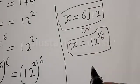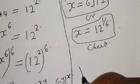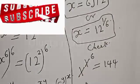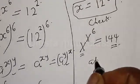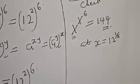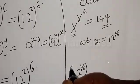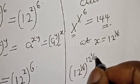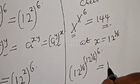Now let's check to confirm if our answer is right. We have the given equation s raised to power s raised to power 6 is equal to 144. The left hand side must equal the right hand side. With s equal to 12 raised to power 1 over 6, we substitute: 12 raised to power 1 divided by 6, raised to power 12 raised to power 1 divided by 6, must equal 144.